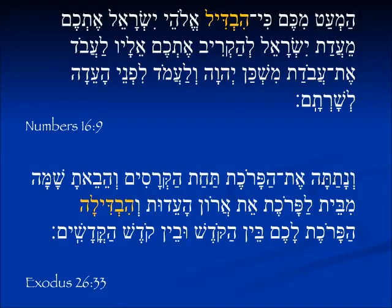In the third person, again we see the yud infix. The form is hivdil. Moses is talking to the rebelling Korah people. The Korah people were already Levites, but they were jealous of Moses and Aaron's position. And Moses says, 'Hama'at' — is it a small thing to you — 'ki hivdil Elohei Yisrael etchem,' that the God of Israel has separated you. You were already separated out because you are Levites.